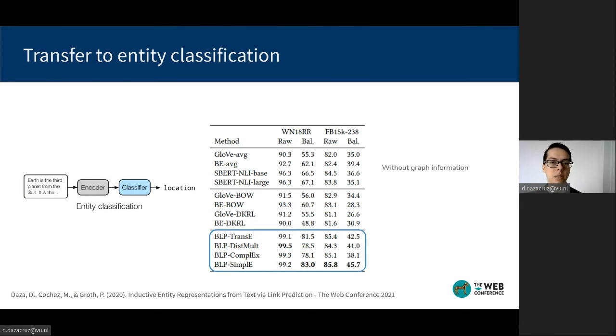Or SentenceBERT, which also uses BERT but is trained to preserve similarities between texts. In these results, we see that the representations produced by BLP are better at compressing the entity description as they result in higher accuracy for the classifier.